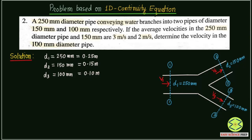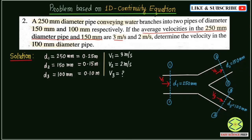From the question, we also have the velocities in the 250 mm and 150 mm diameter pipes. Velocity V1 in the 250 mm pipe is given as 3 meters per second, while V2 in the 150 mm pipe is given as 2 meters per second. V3, the velocity in the 100 mm diameter pipe, is what we need to calculate.